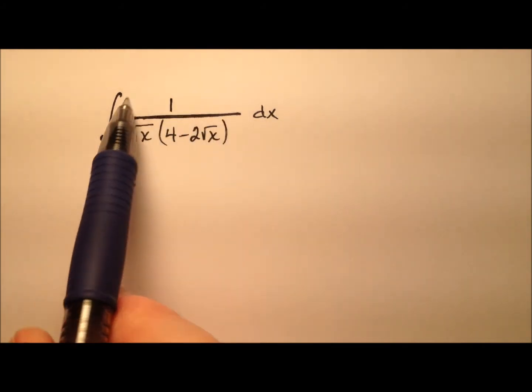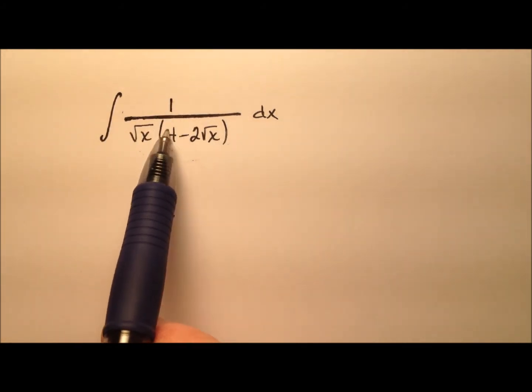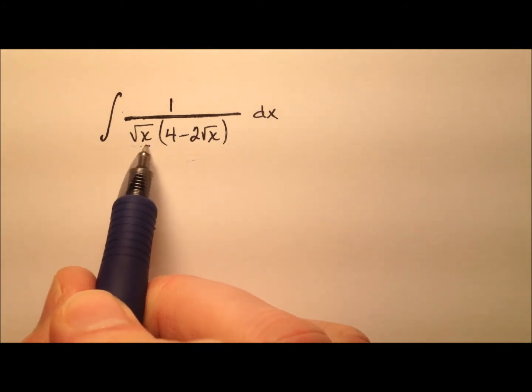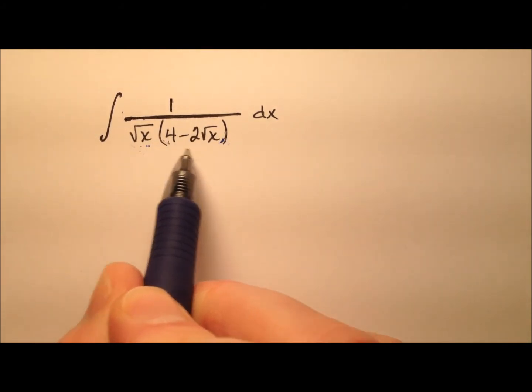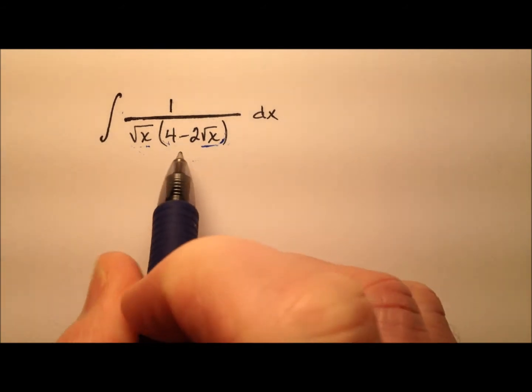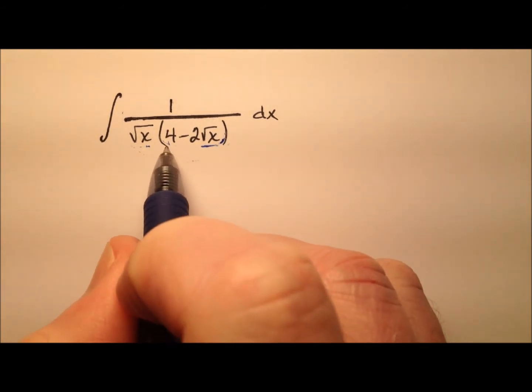Looking at this integrand, we have a fraction, 1 over the square root of x times this quantity here, which also includes a square root of x. So it seems like this might be a great candidate for a u substitution.